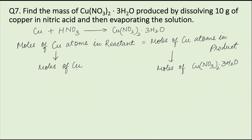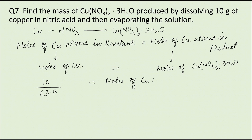As we can see, moles of copper is equal to moles of copper nitrate trihydrate. Moles of copper equals weight of copper (10 grams) divided by atomic weight of copper (63.5 grams), and this is equal to moles of Cu(NO3)2·3H2O.